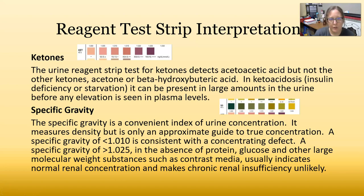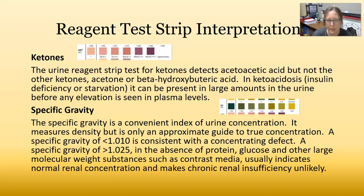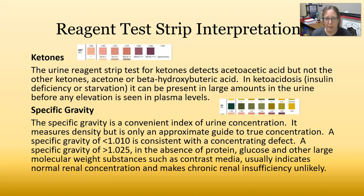For ketones: the urine reagent strip test for ketones detects acetoacetic acid, but not the other ketones like acetone or beta-hydroxybutyric acid. In ketoacidosis due to insulin deficiency or starvation, ketones can be present in larger amounts in the urine before any elevation is seen in the plasma levels. The presence of ketones signifies the person is burning fat for fuel — this could be intentional on a ketogenic diet, or it could indicate a pathology such as diabetic ketoacidosis.